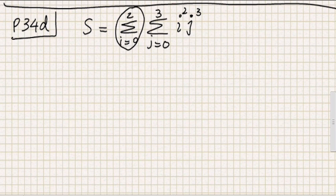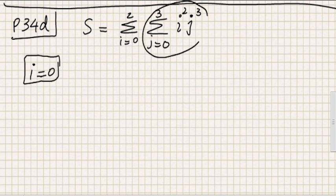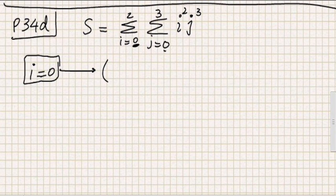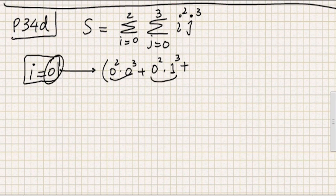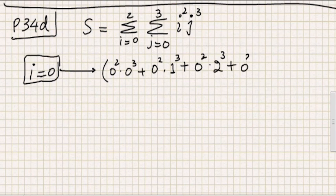Just as before, we treat the outer summation like an outer loop — you can think of it as nested loops from programming. We fix i to its first value of 0 and iterate the inner summation through j = 0, 1, 2, 3. With i fixed at 0, every term has 0 squared multiplied by some power of j, so all terms are 0. The sum for i=0 is 0 plus 0 plus 0 plus 0, which equals 0.